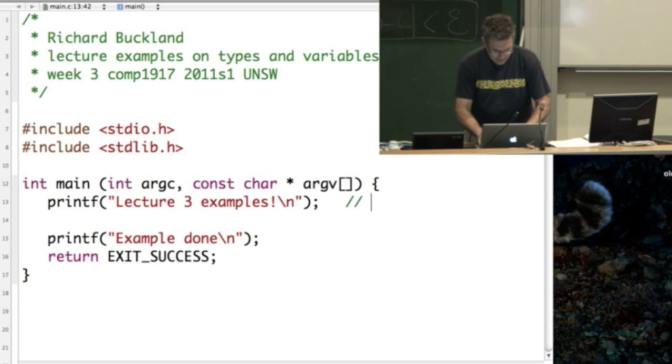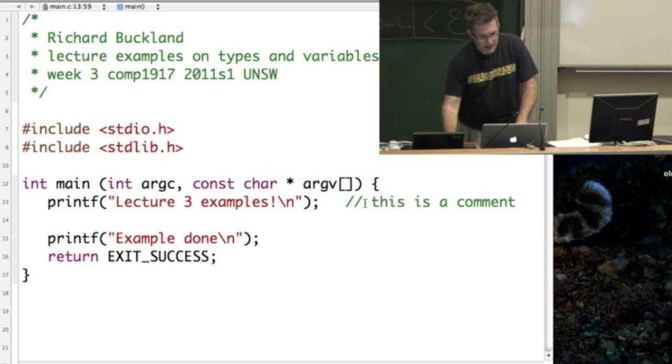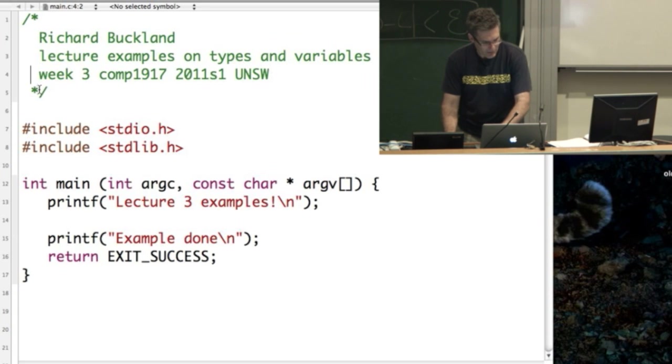So I could say, this is a comment. Everything from the slashes to the end of the line is a comment. But the comment stops at the end of the line. But if you start a comment like this, slash asterisk, then everything after there is a comment until you get to an asterisk slash.